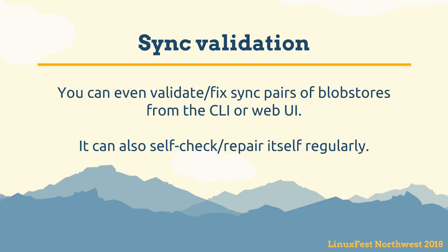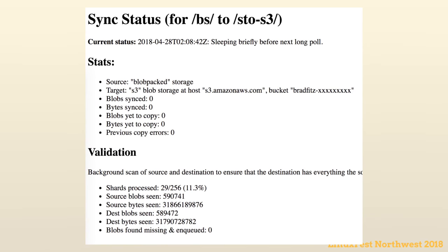If you're paranoid something is out of sync, there's a sync validation tool. You can verify all your copies have what you want from the command line or the web UI, where you can configure as many one-way sync pairs as you want — or set up two one-way pairs to make an eventually consistent pair. Here I'm validating that all my blobs are on S3 as I thought, and it's found nothing screwed up at 11.3% through.